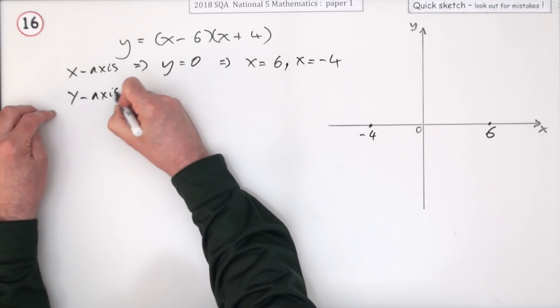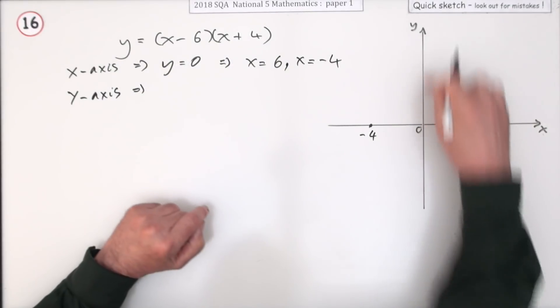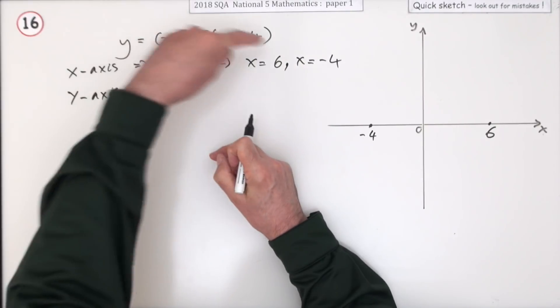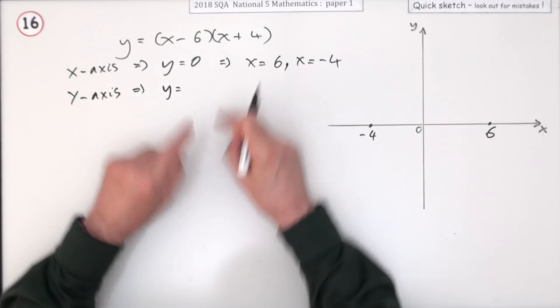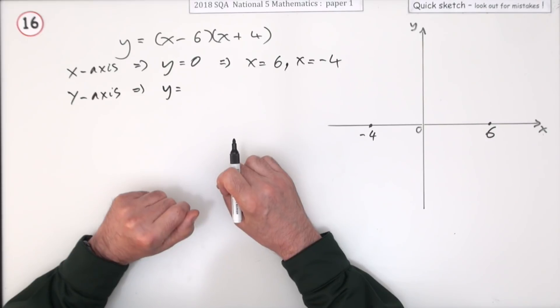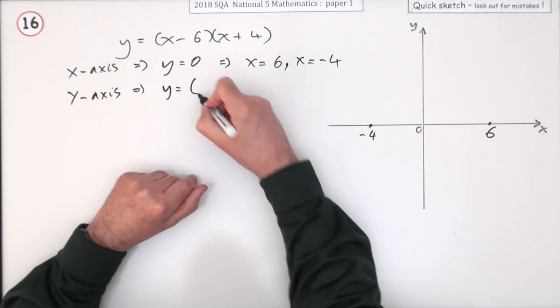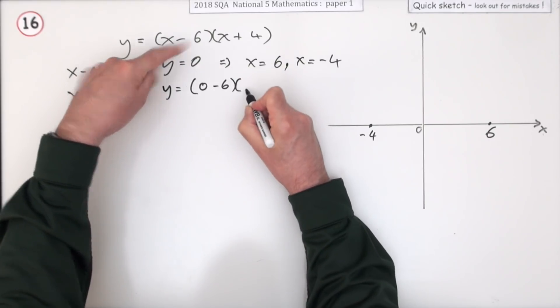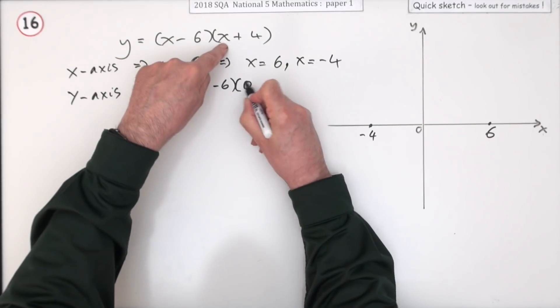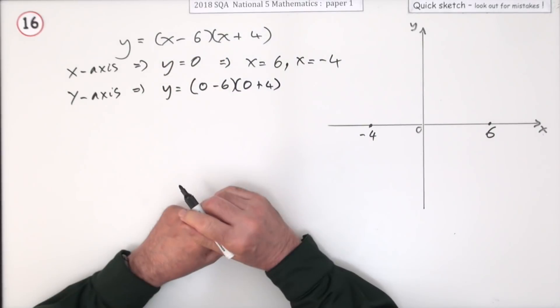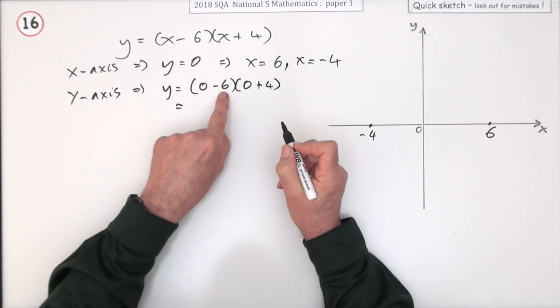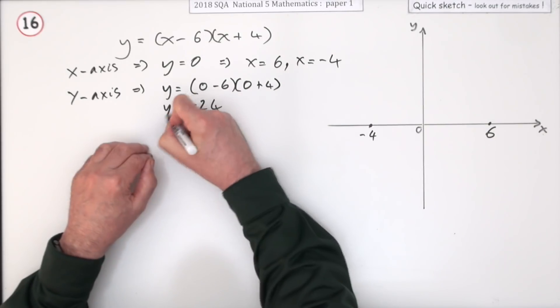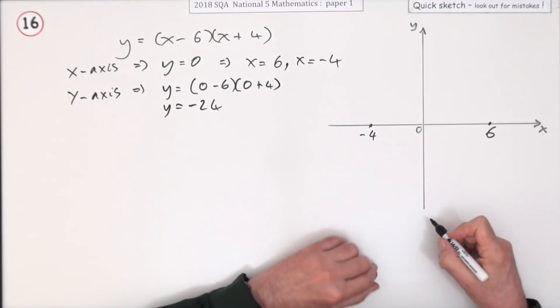Where does it cut the y-axis? Well if you're on the y-axis, x is 0, so y is going to be—and you don't need to multiply it back out to do that, it's an identical expression, easier to do the arithmetic with that. If x is 0, that's 0 minus 6, which is of course negative 6. If x is 0, that's 0 plus 4, which is just 4. So it's negative 6 times 4, which is negative 24. Obviously we'll be using a different scale now for this point, so this is down at negative 24.